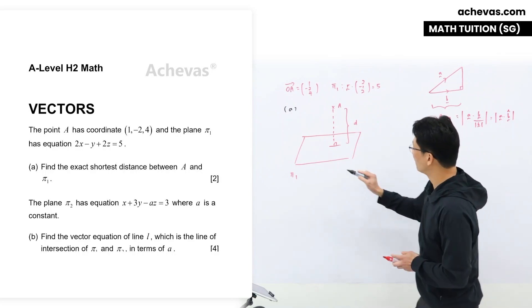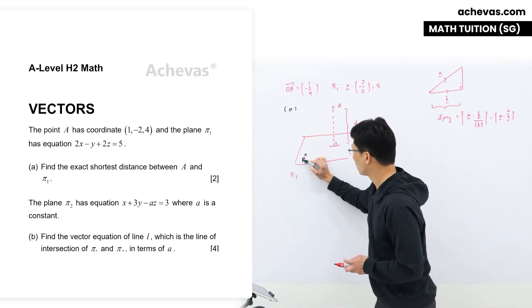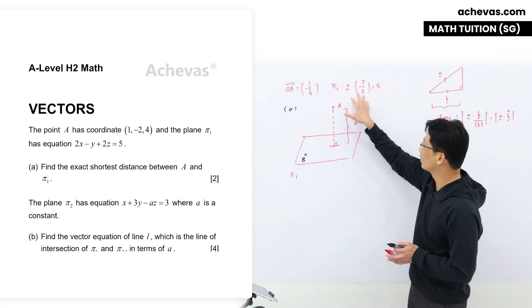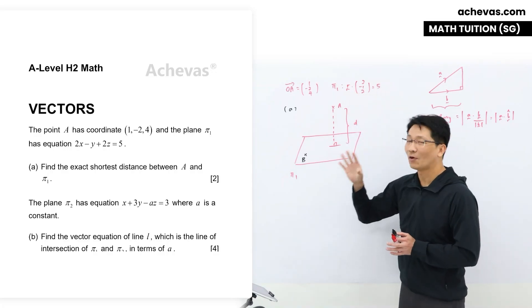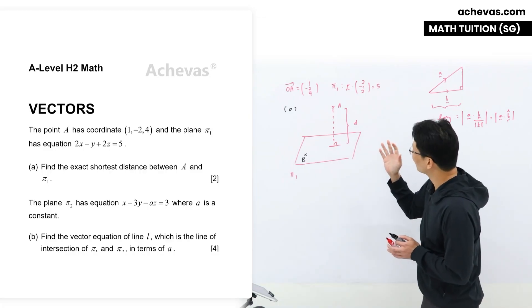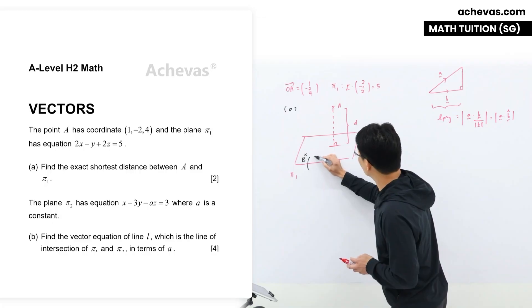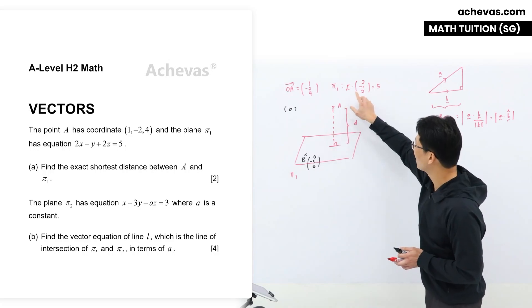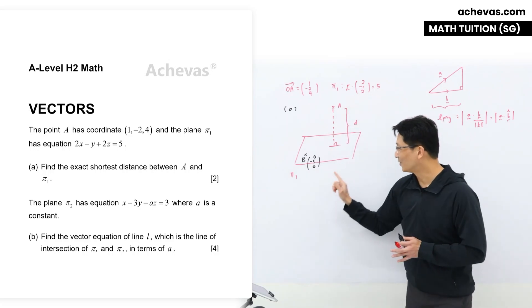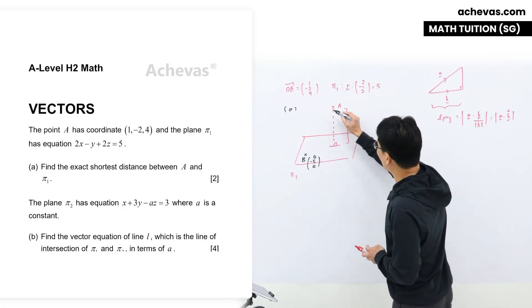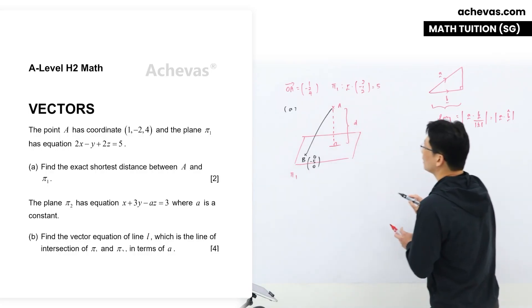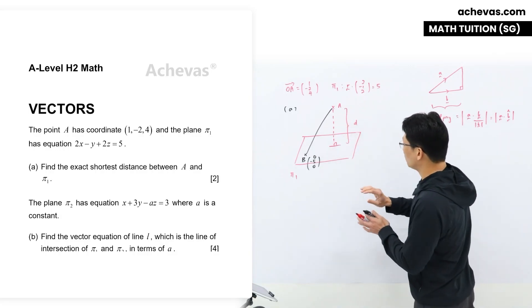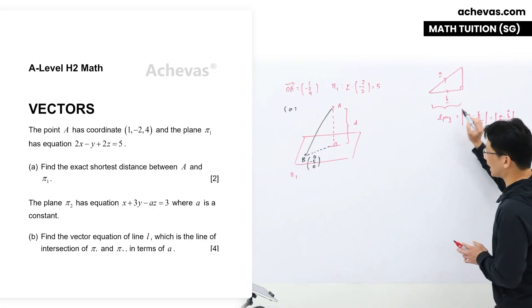I'm going to come up with a random point that is on the plane π₁ — we can call it point B. By observation, as long as the point satisfies 2x - y + 2z = 5, it lies on the plane. One such point is (0, -5, 0): subbing it in and dotting it out gives 5. So this point lies on the plane. We can connect OA and OB to form a diagonal and use the triangle formed with this formula.